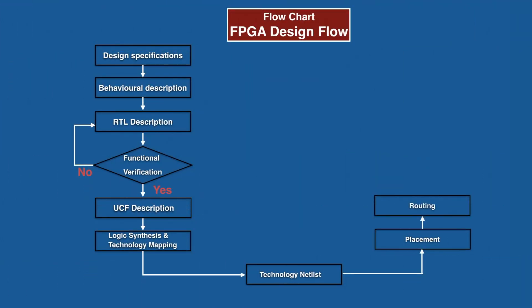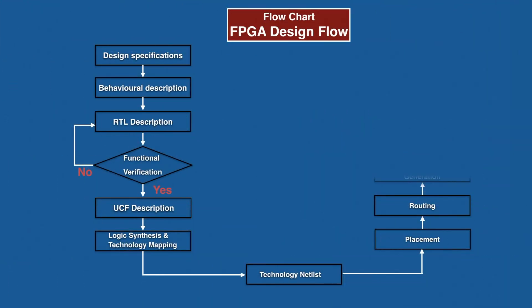The ninth stage in the flow chart of FPGA design flow is routing. In the routing stage, the placed gates on FPGA are interconnected together as per the netlist of the design. The tenth stage is bitstream file generation. In this stage, the placed and routed design image is converted into a bitstream file that can be downloaded to the FPGA device.